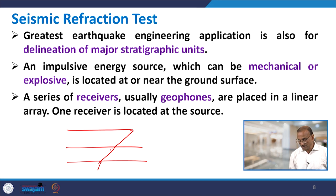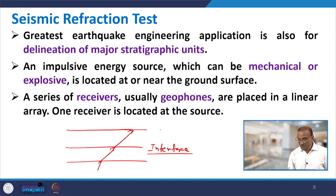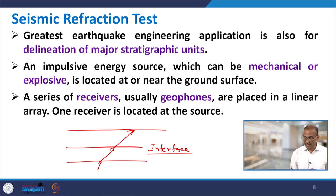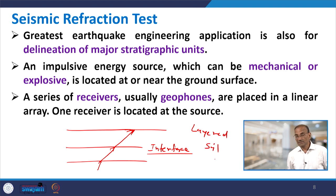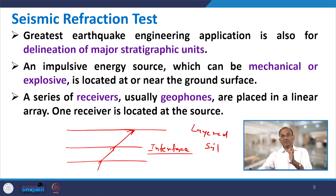In refraction, a wave changes its path at the interface of two layers — that is what refraction means. If you have homogenous material, refraction would not occur, but normally we have layered soil. An impulsive energy source, which can be mechanical or explosive, is used near the ground surface. A series of receivers called geophones are placed in a linear array, with one receiver located at the source.